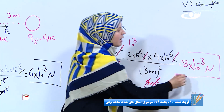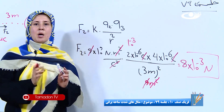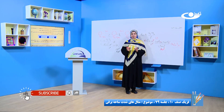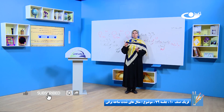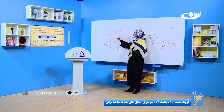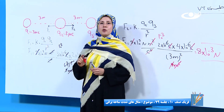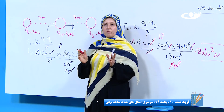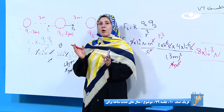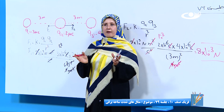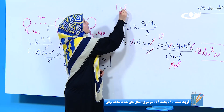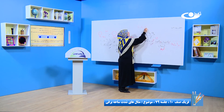واحد اندازه‌گیری هم می‌شه نیوتن. ما مقدار قوه اول و دوم را پیدا کردیم. اما اگر بخوایم قوه مجموعی را پیدا کنیم، باید به جهت هر دو قوه نگاه کنیم. قوه اول و قوه دوم ما هر دو در جهت‌های مخالف هستن. وقتی که قوه‌ها در جهت‌های مخالف بود برای پیدا کردن قوه مجموعی باید قوه دوم را از قوه اول کم کنیم. پس برای پیدا کردن F ما داریم F2 منفی F1.